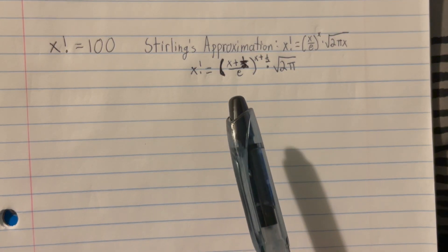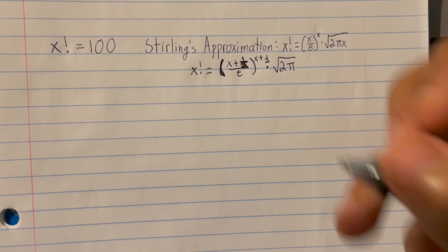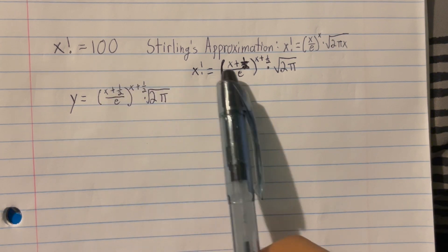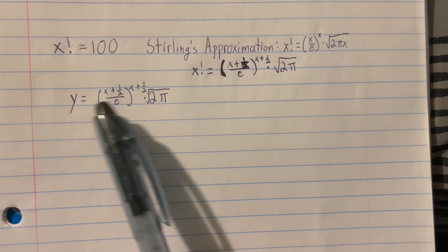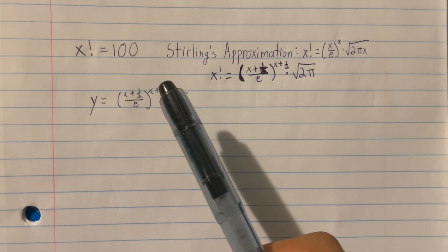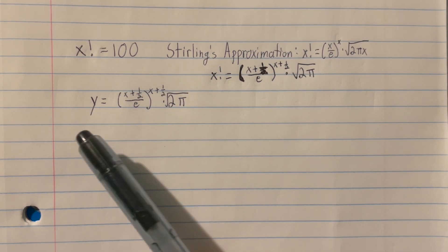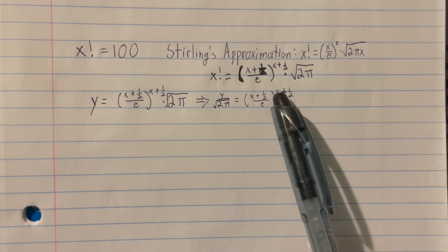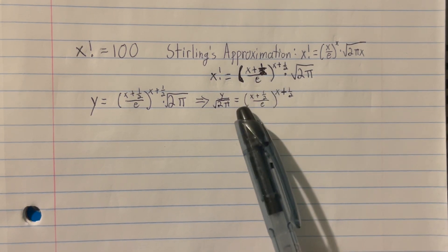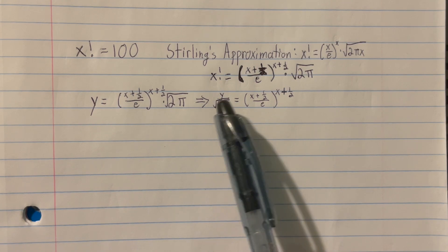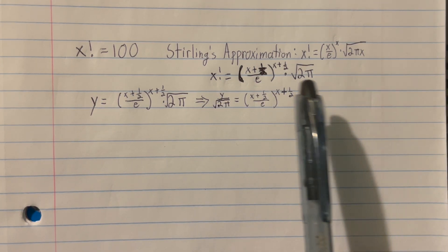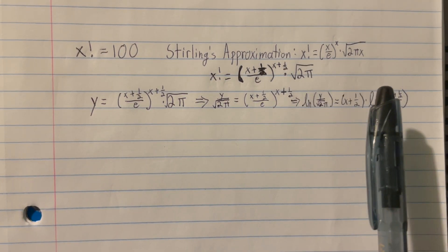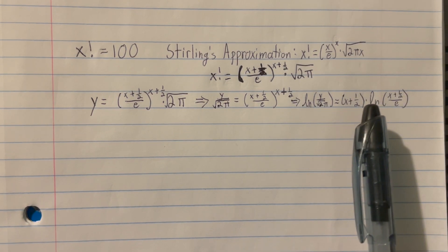Now that we have that out of the way, let's start solving for x. First, we rewrite the equation with y in place of x factorial. We can then divide both sides by the square root of 2π. What's really annoying is the x + 1/2 sitting in the exponent — to bring it out, we apply the natural log on both sides, using the log property that lets the exponent come out in front.